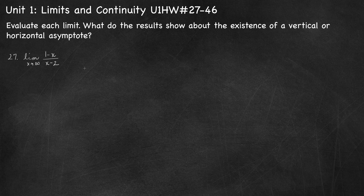Hello. In this video, I'll be working through Unit 1 homework problems 27 through 46. These problems deal with limits involving infinity. The directions say to evaluate the limit and then determine what that says about the existence of a vertical or horizontal asymptote.